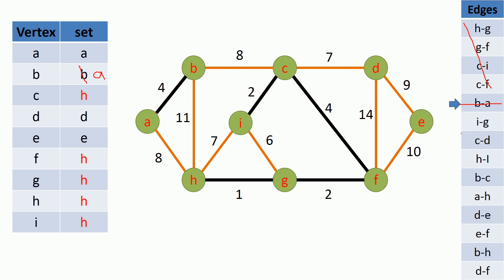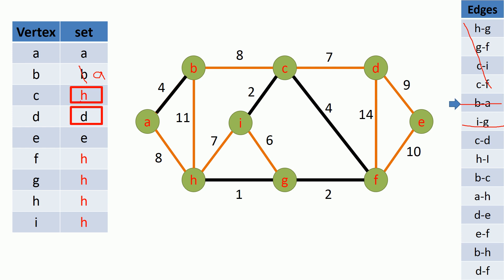The next remaining minimum weighted edge is the edge between I and G vertices. I vertex currently belongs to set H and G vertex also currently belongs to set H, therefore this edge is not going to be added to our MST and we ignore it. The next remaining minimum weighted edge is the edge between C and D vertices. C vertex is currently belong to set H and D vertex is currently belong to set D, so these are in different sets. Therefore we can add that edge to our MST and union the sets by changing D vertex set to H.